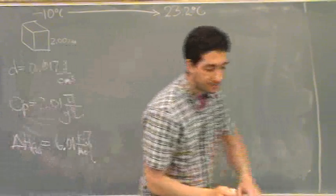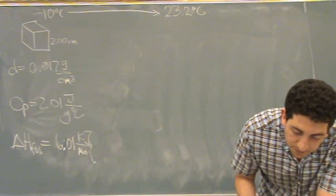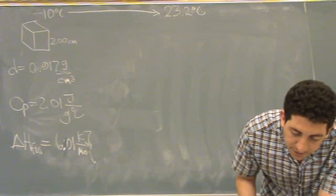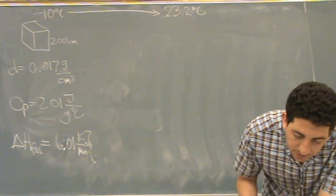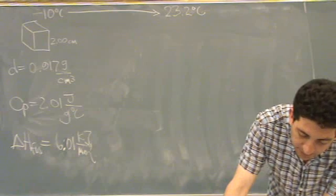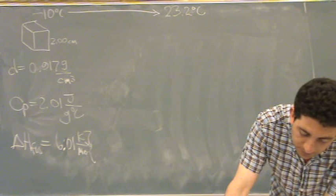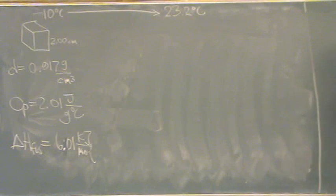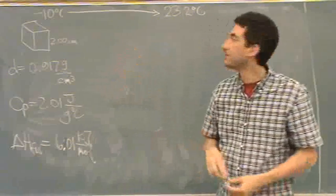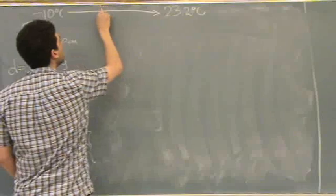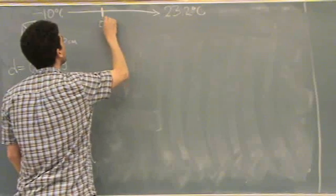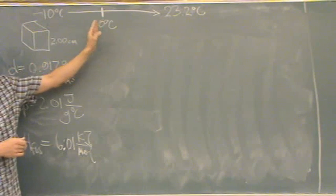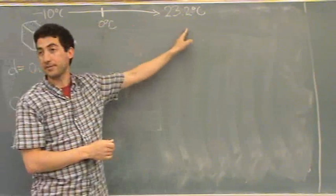So all this is given, and it wants to know what is the total enthalpy change. This is a slightly different problem than we've seen before. You'll have to note that somewhere here in the middle, when it hits 0 degrees C, that's where the melting is going to happen. So the ice will warm up from minus 10 to 0, then it will melt, then it will go from 0 to 23.